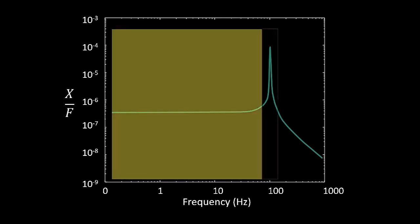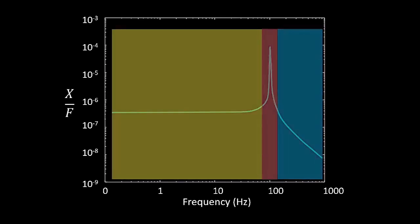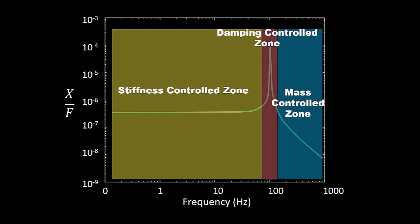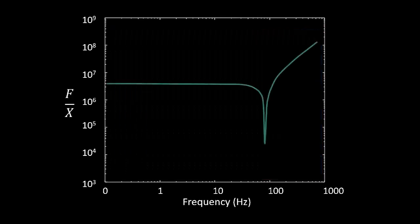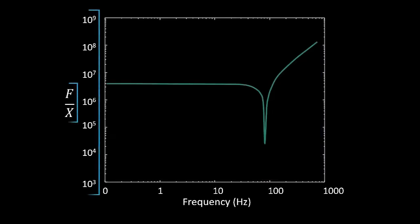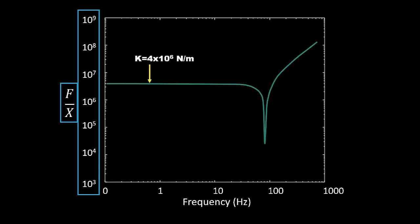There are three different zones of an FRF: the yellow stiffness controlled zone, the red damping controlled zone, and the blue mass controlled zone. If I flip the output and input, now my FRF is upside down and the axes show F over X. This is called dynamic stiffness. The stiffness K can be found by locating that flat line in the stiffness controlled portion, and it equals 4×10⁶ newtons per meter, which checks out with the values I entered.